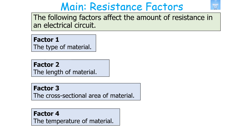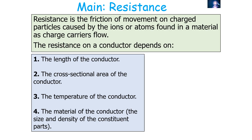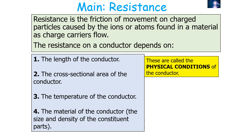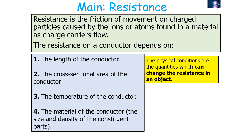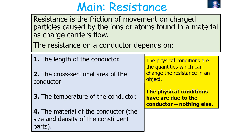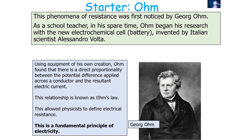The resistance of a conductor depends on its length, cross-sectional area, temperature, and material — the size and density of its constituent parts. These are called the physical conditions of the conductor. The physical conditions are the quantities which can change the resistance in an object, due to the conductor itself and nothing else. This understanding allows us to define electrical resistance, a fundamental principle of electricity.